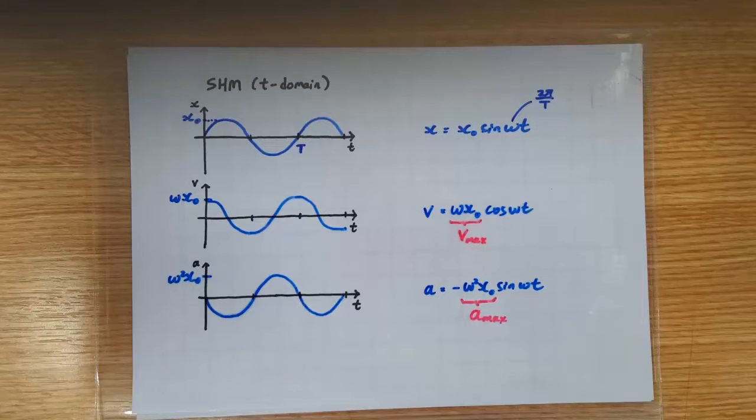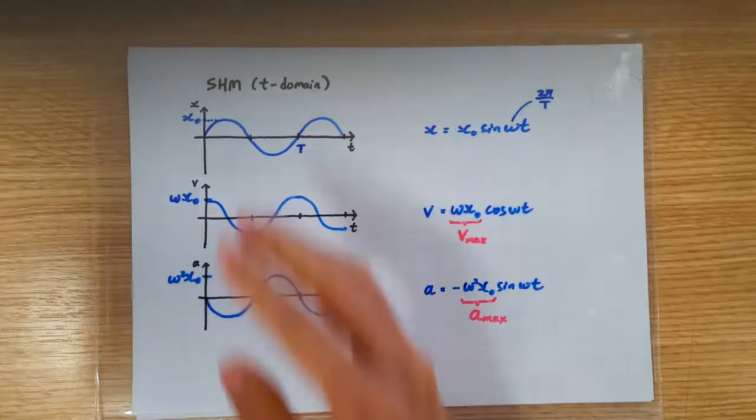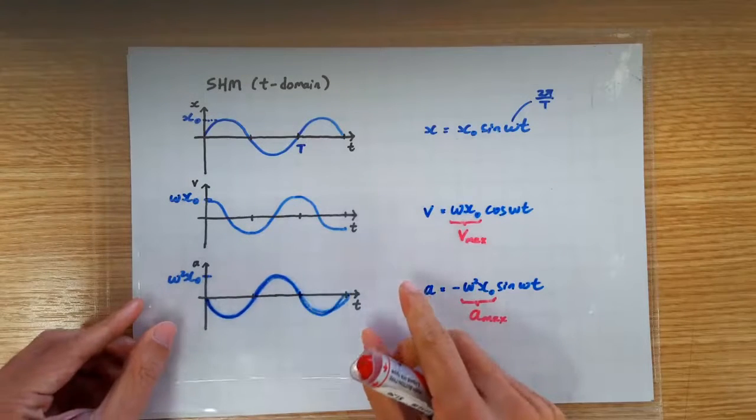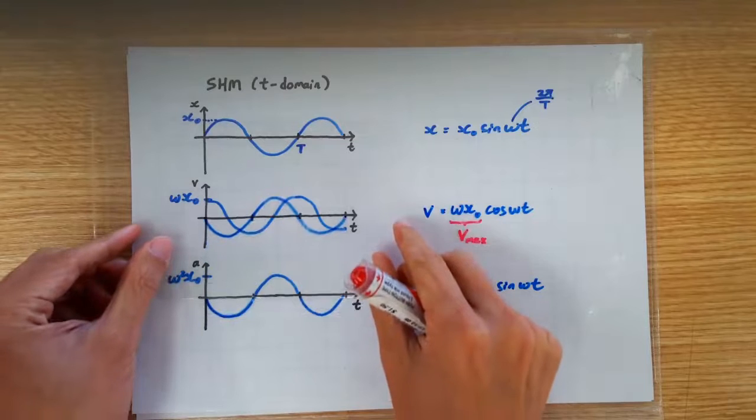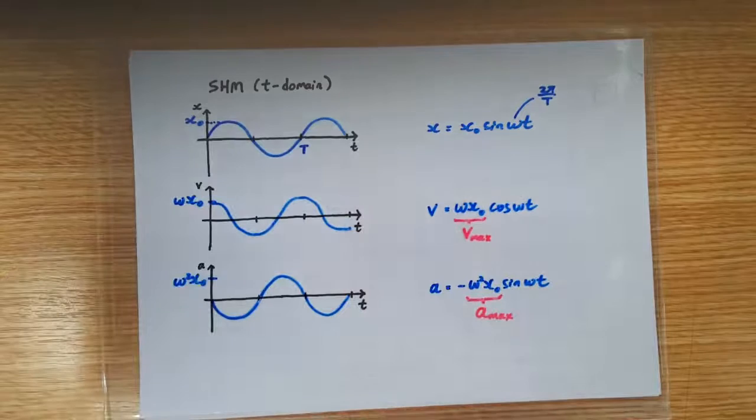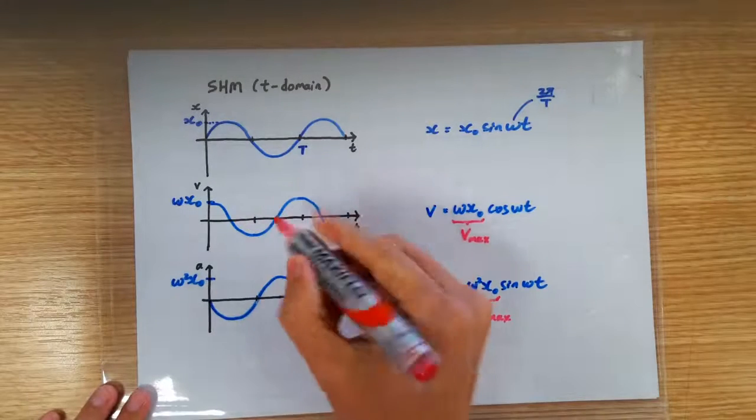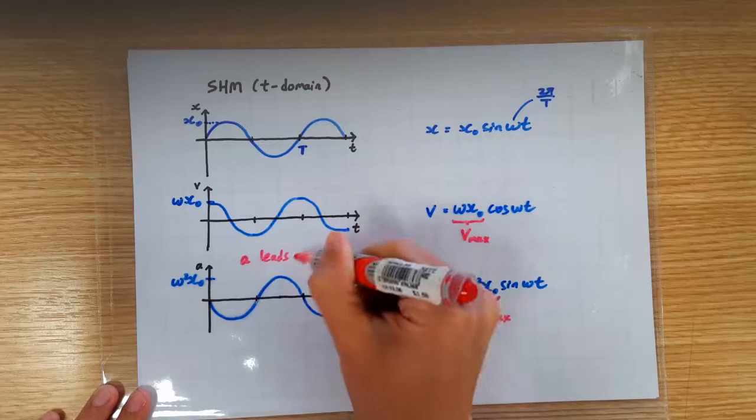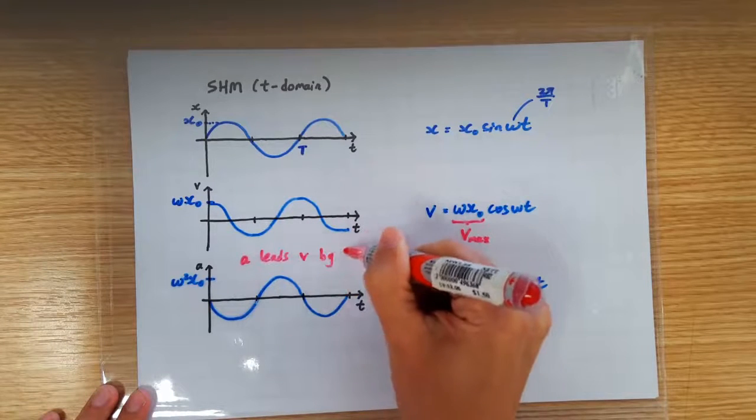Now let's look at the phase relationships between these three graphs. Notice that the acceleration time graph is leading the velocity time graph by a quarter of a cycle. So that tells us that in an SHM, the acceleration leads its own velocity by a quarter of a cycle.